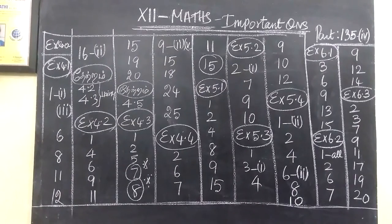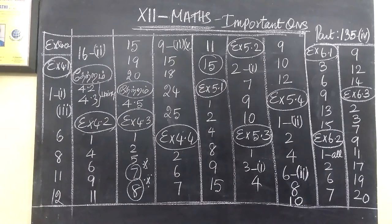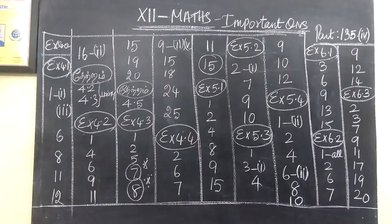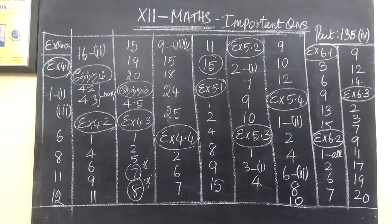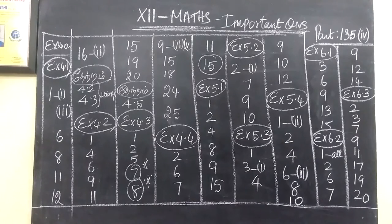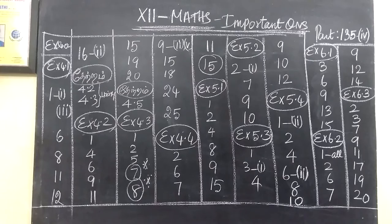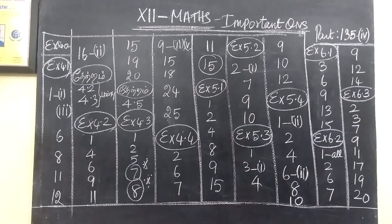So now question number 12 is the massive important questions. Exercise 4.1. Last video is the continuation. Question number 1 is the subdivision 1, 3. Then 6, 8, 11, 12.